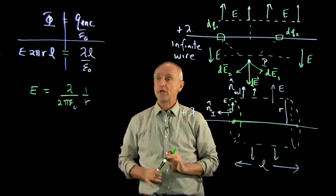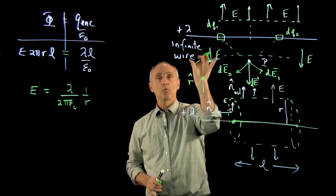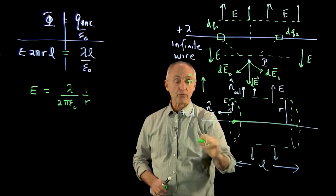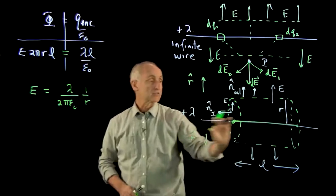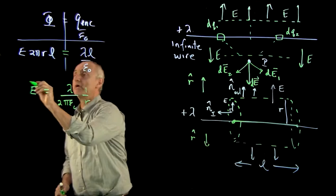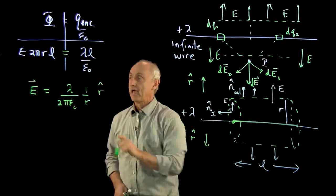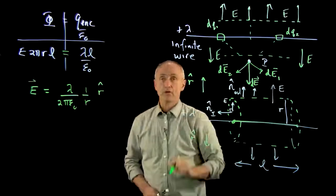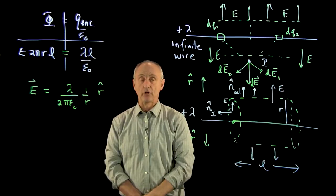Well, how do we express this vectorially? We'll choose a cylindrical radially outward vector. So on both sides, the r hat points away from the axis of symmetry. And so we can write this as an electric field like that. And there is the electric field for an infinite wire, one of our basic examples of the application of Gauss's law.